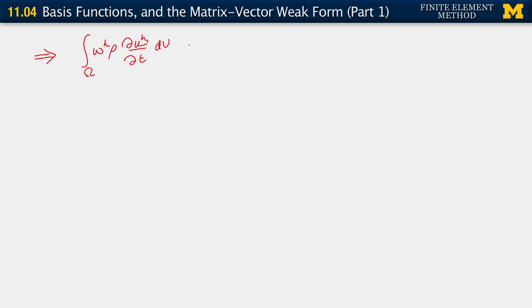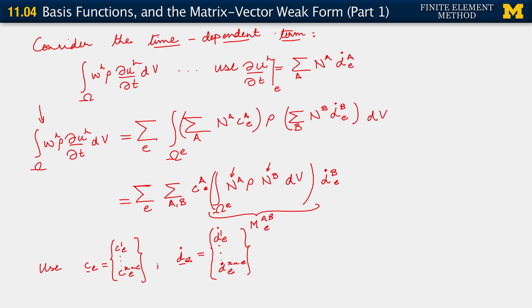Right? So this integral that we're trying to evaluate is essentially now sum over e C_e transpose, right? By assembling all those, you know, by replacing the explicit sum over nodes a and b, right? So replacing that explicit summation.